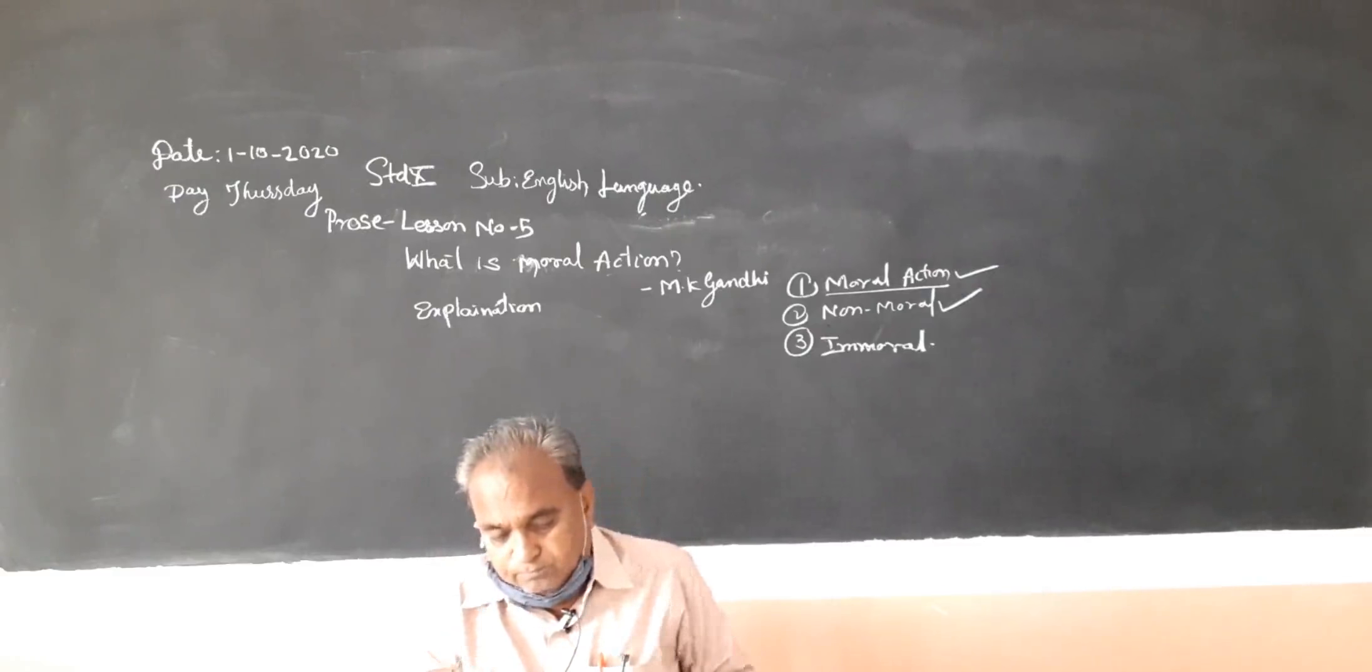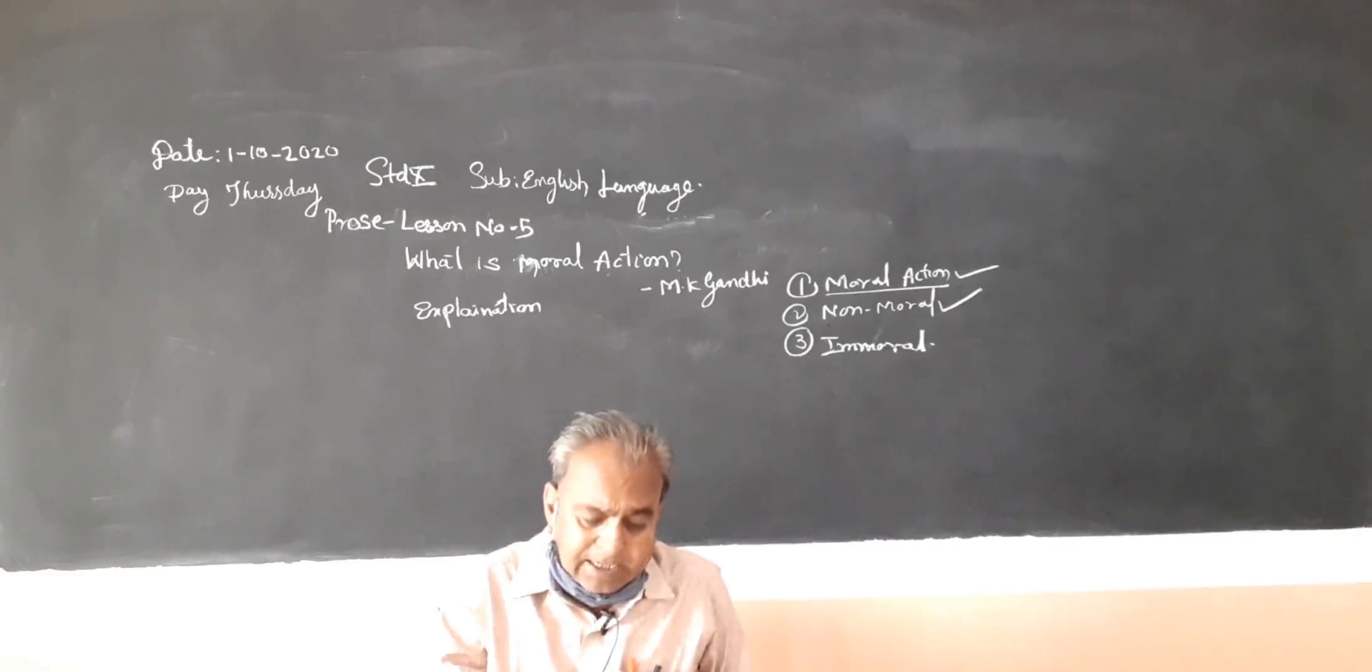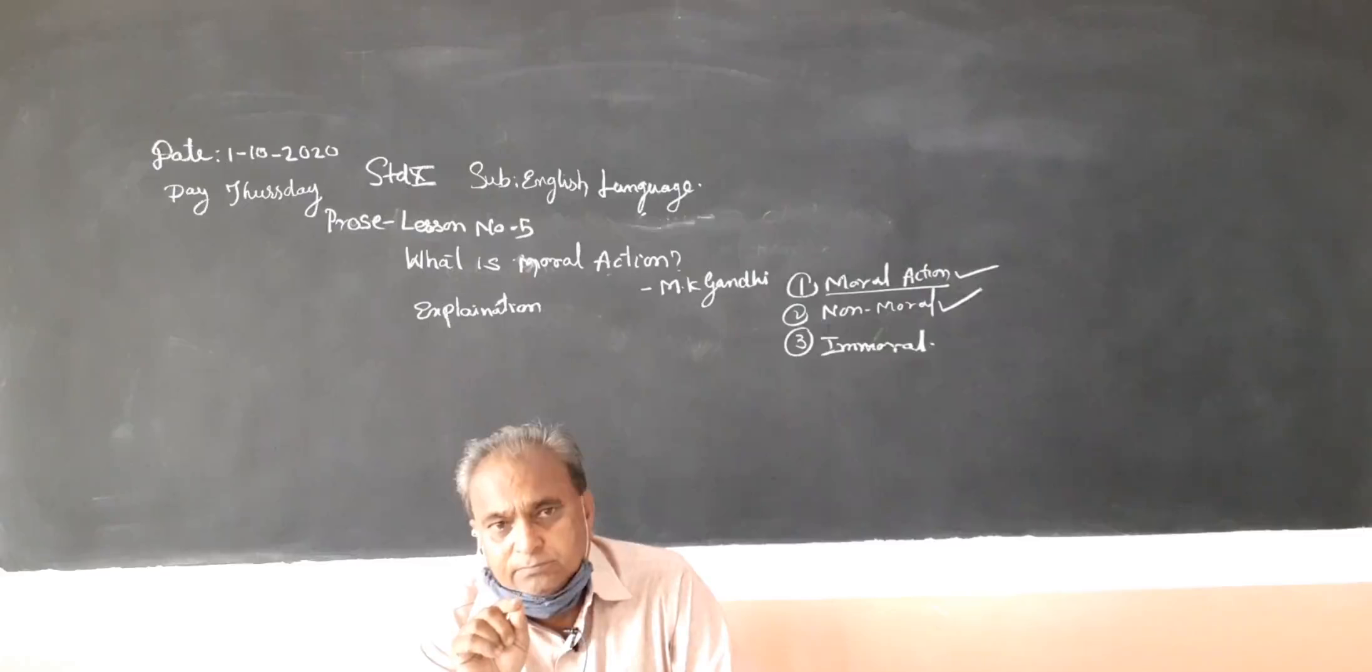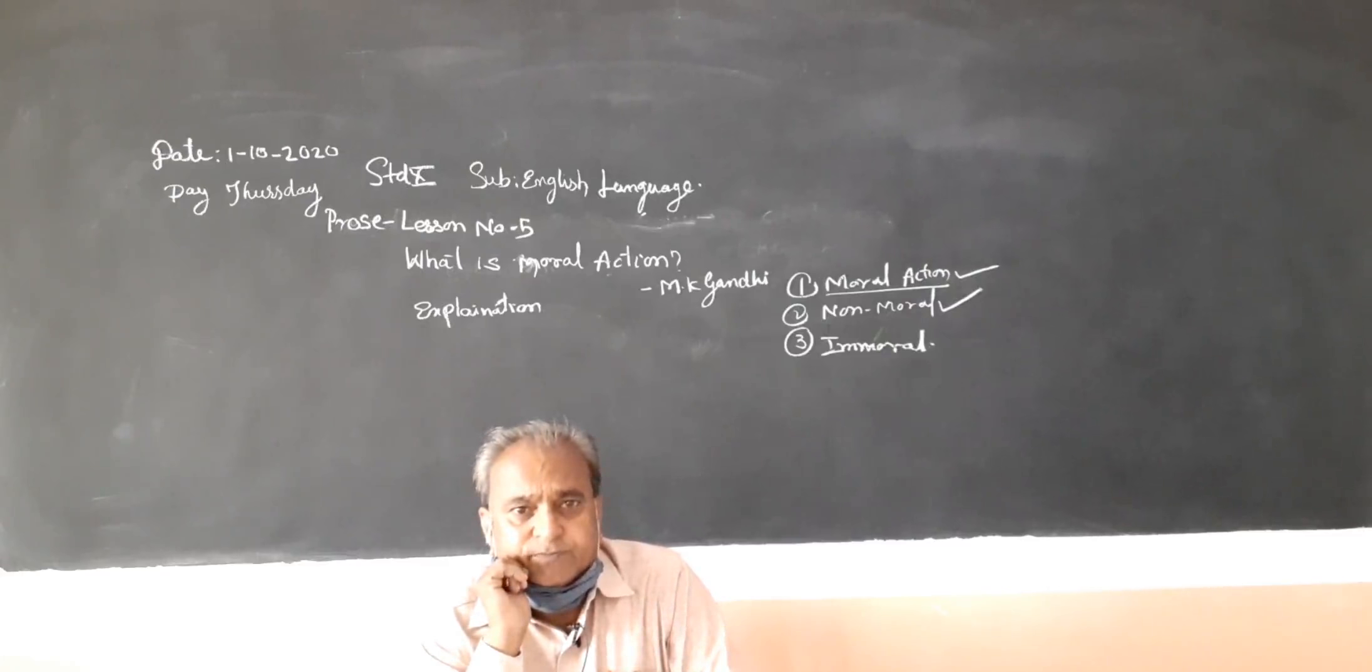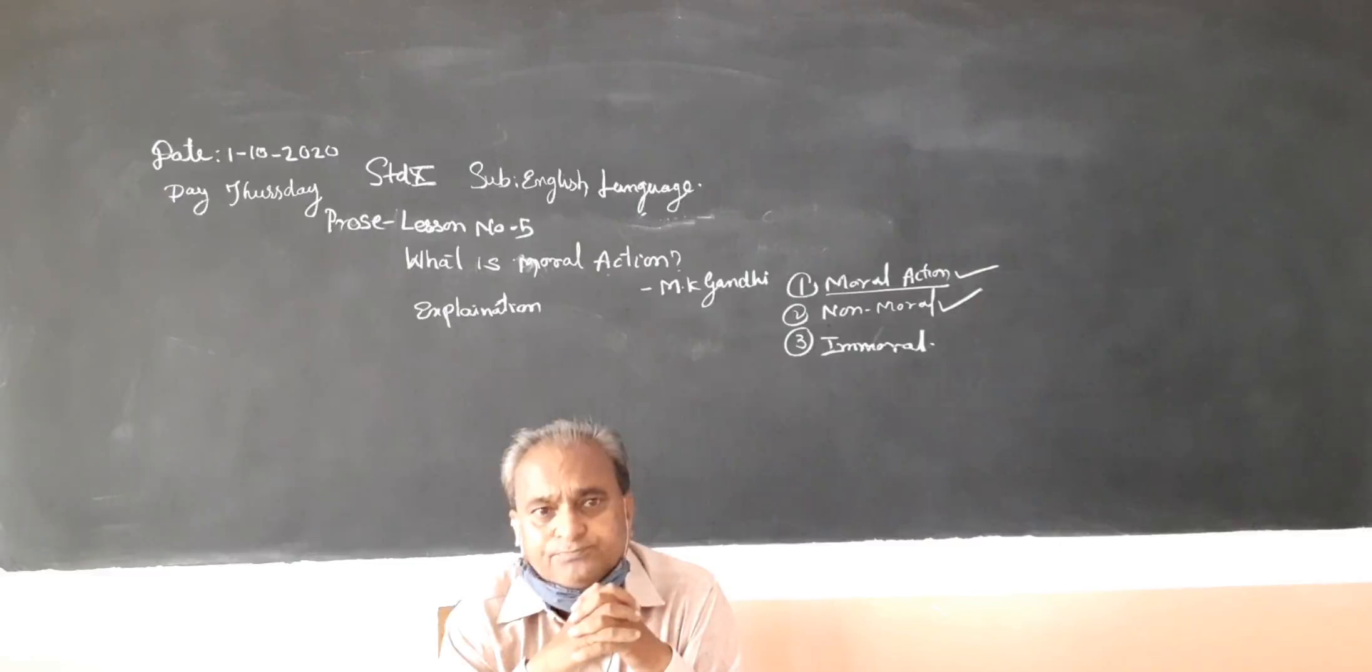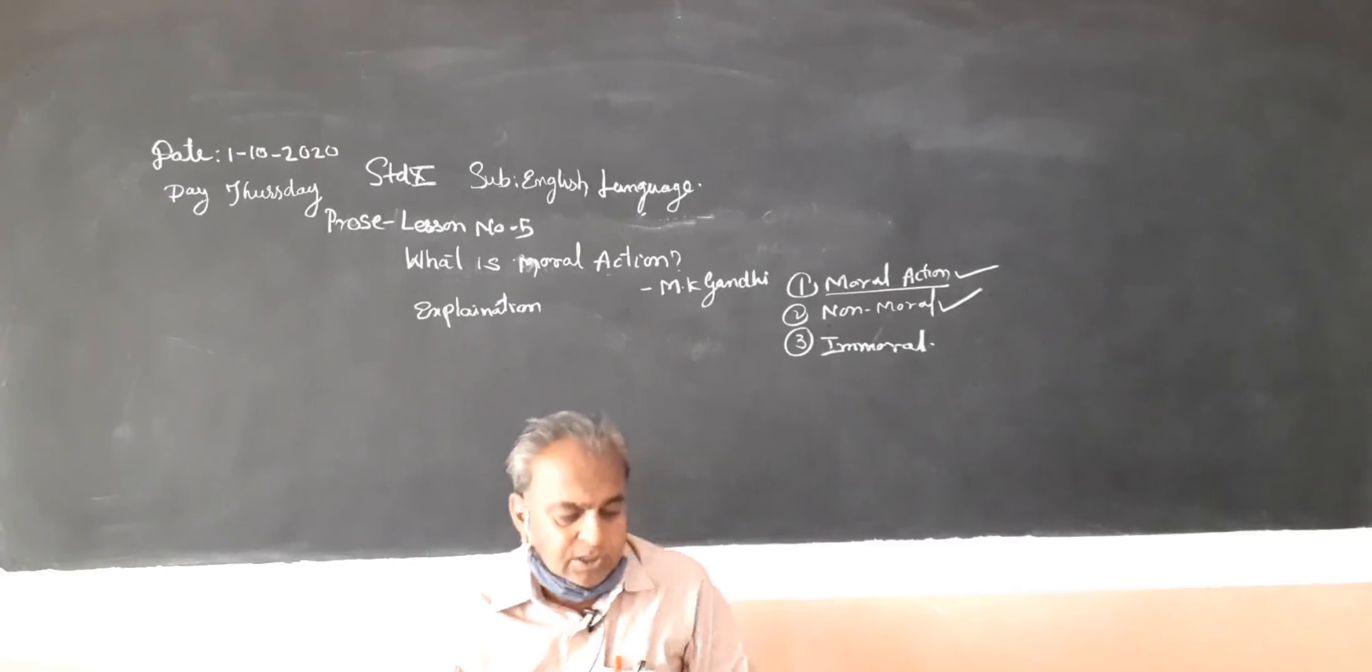Now children, I tell you all to read this lesson what is moral action twice and then write the meanings of the difficult words twice or thrice. And then try to write the summary whatever I have explained here. Note it down. Five to six points are there. You concentrate on these points. It will be better for you all. And write the question and answers of what is moral action. Thank you. Thank you very much.